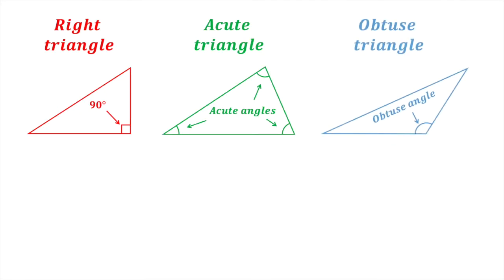The final type of triangle is an obtuse triangle. In this type of triangle, one of its three angles is obtuse, that is, greater than 90 degrees and less than 180 degrees.